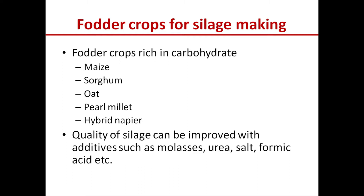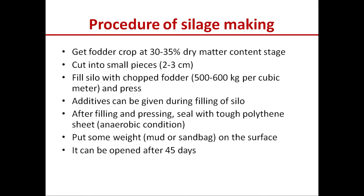Quality of silage can be improved with additives such as molasses, urea, salt, formic acid, etc., so that fermentation becomes faster and more proper. For the procedure of silage making, first and foremost, get the fodder crop at 30 to 35 percent dry matter content stage — that means 65 to 70 percent water in the fodder, i.e., green fodder directly from the field.